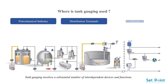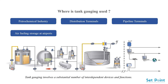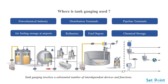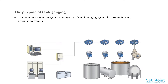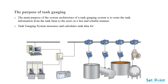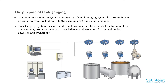Tank gauging is used in the petrochemical industry, distribution terminals, pipeline terminals, air fueling storage at airports, refineries, fuel depots, and chemical storage. The main purpose of the tank gauging system architecture is to route tank information from the tank farm to the users in a fast and reliable manner. It measures and calculates tank data for custody transfer, inventory management, product movement, mass balance, loss control, leak detection, and overfill prevention.